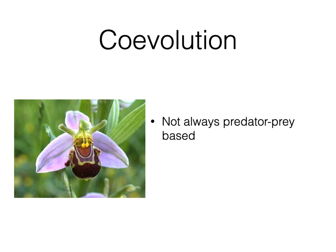Not all co-evolution is predator-and-prey based — it's not always about death and destruction. Here's a picture of a honeybee orchid. I also have a video of this orchid on eCampus, so pause and take a look at that video and then come back and we'll talk about what you saw.